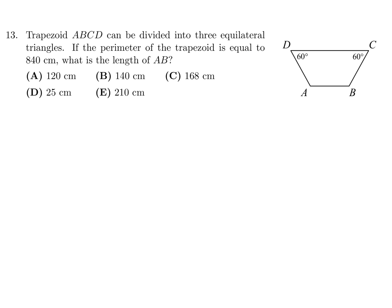Trapezoid ABCD can be divided into three equilateral triangles. If the perimeter of the trapezoid is equal to 840, what is the length of AB? So three equilateral triangles, okay, so that basically means, let me see if I can do this, three equilateral triangles. Okay, I just had a brain freeze there for a second. I think it's something like that approximately, I think, is what they're really trying to get at.